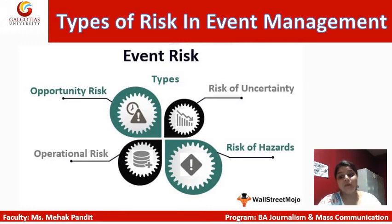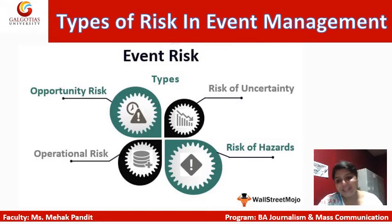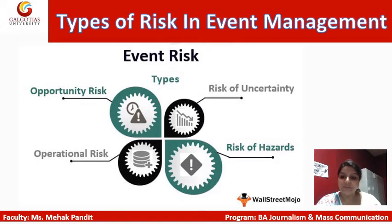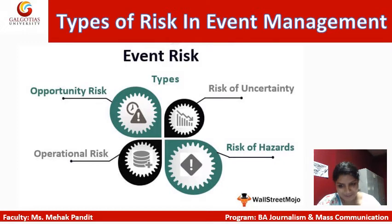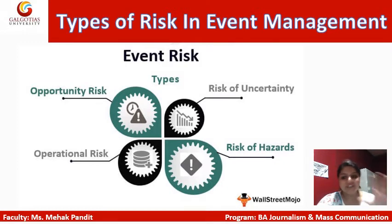Now that we have understood the concept of risk management, let us learn about the types of risk that could happen in your event. There are four types of risk: first, opportunity risk; second, risk of uncertainty; third, risk of hazards; and finally, operational risk. Let us learn about each type in detail.